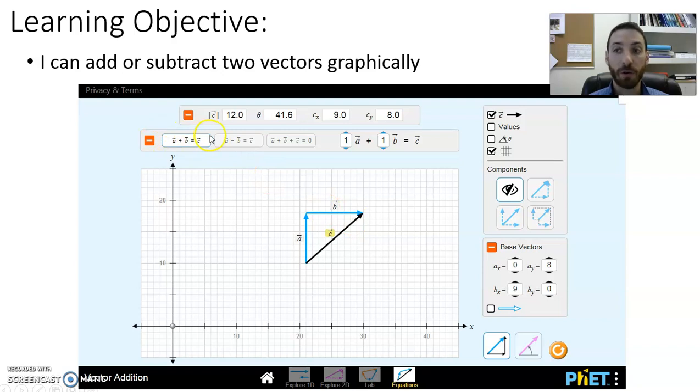Now instead, if we were to go vector a minus vector b, or subtract these vectors, look what happens to our sum.